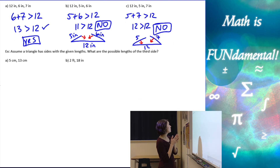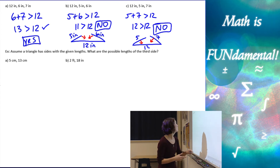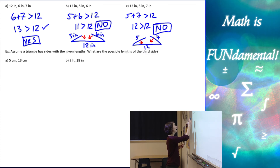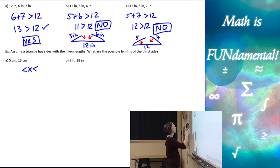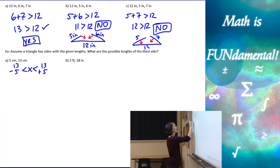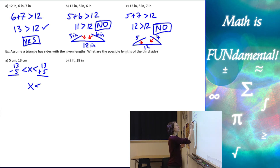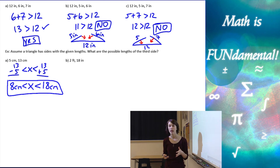Now let's look at our last couple of examples: given the lengths of two sides of a triangle, what are the possible lengths for the third side? We use the corollary here. Taking thirteen plus five and thirteen minus five, X has to be less than eighteen centimeters and greater than eight centimeters in order for this triangle to work out.